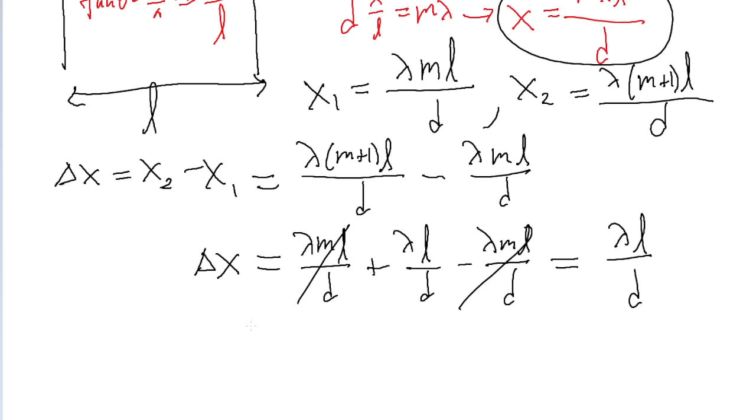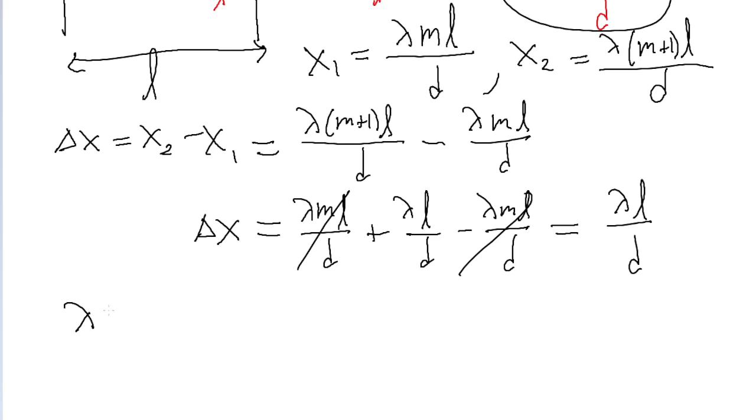So now we've simplified our equation in such a way that we don't need to know any specific x value, just the difference between those two. And since we're looking to solve for the wavelength now, we'll just rewrite the equation to solve for lambda. So lambda is equal to d delta x divided by L.